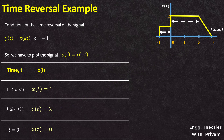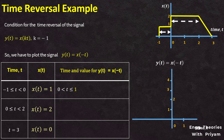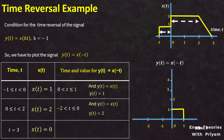To perform the time reversal we flip the signal x(t) about the y-axis. The time interval t ≥ -1 and t < 0 will become t ≥ 0 and t < 1, with y(t) = 1. The interval t ≥ 0 and t < 2 will become t ≥ -2 and t < 0, with y(t) = 2. Finally, t = 3 will become t = -3, with y(t) = 0.